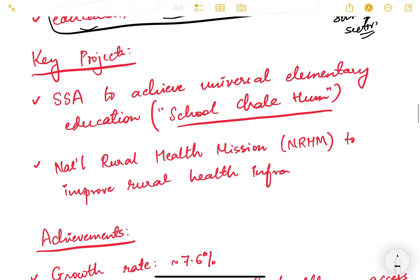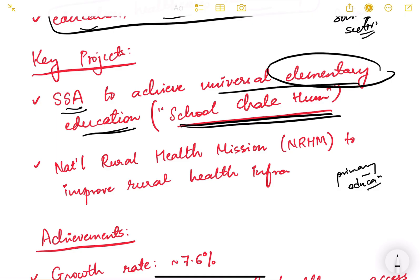A key project during the 10th plan was Sarva Shiksha Abhiyan, associated with the campaign 'School Chale Hum.' It focused on compulsory primary education and school enrollment, encouraging students who were not previously attending schools. The goal was to achieve universal elementary education.